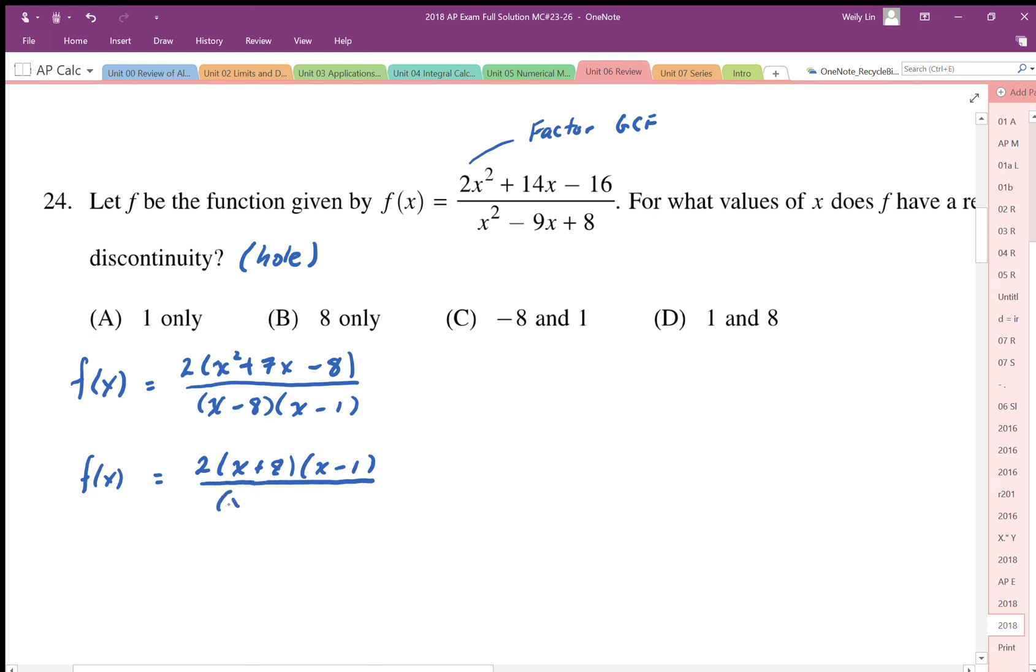So we end up with x minus 8. That happens to be a vertical asymptote. And our removable discontinuity is the factor that cancels out. So this gives us the hole. The answer is 1 only.